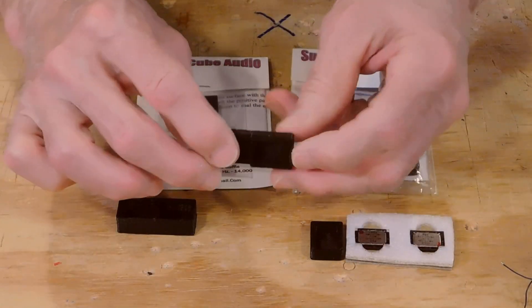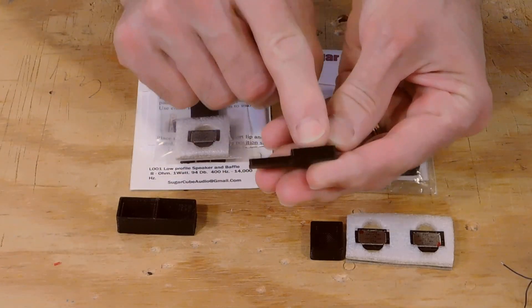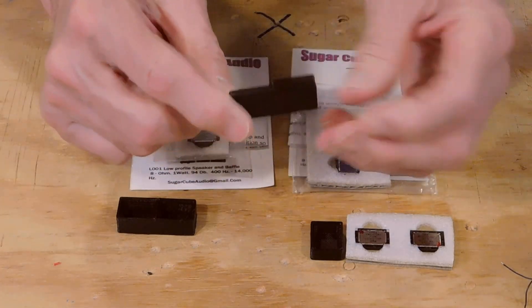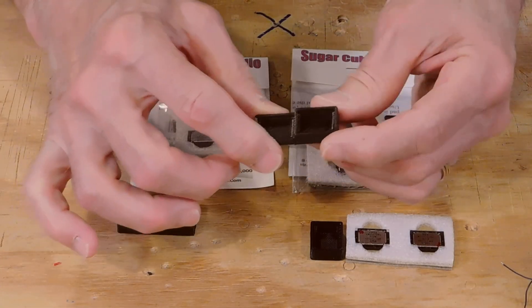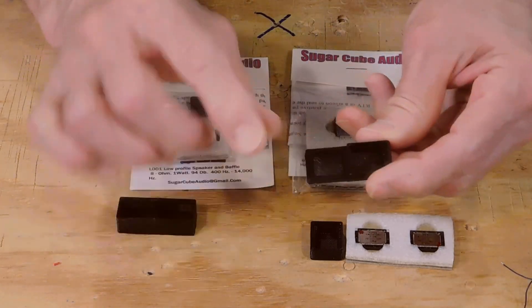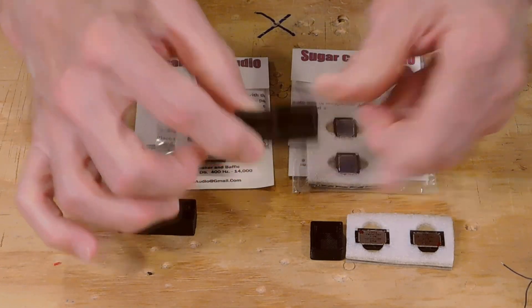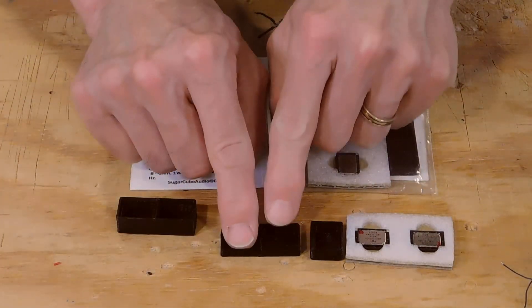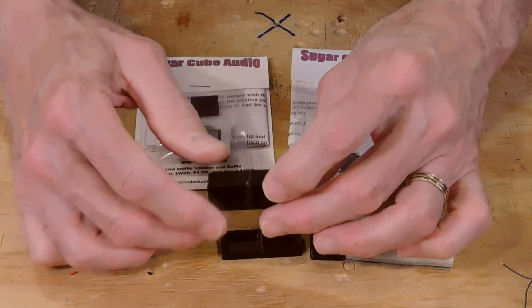You can see here he's got the standard depth single enclosure. And then he's got this one with one shallow and one deep on the same printed product. So you can have a deeper enclosure for more bass and a shallower enclosure for higher frequency sounds. It's like having a woofer and a tweeter right there next to each other. He has a double deep one as well.